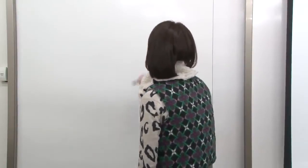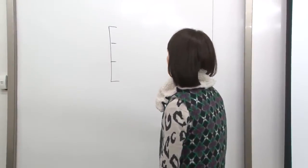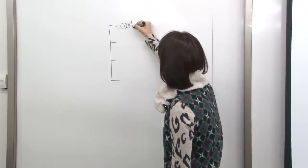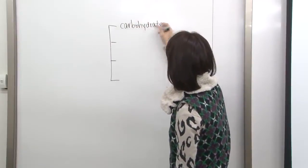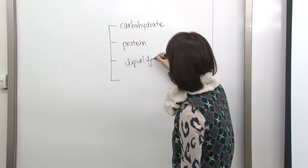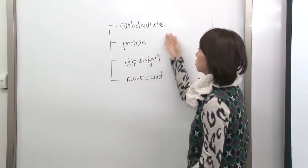Now that we've covered some terms, let's go to the organic compounds. Our body is made up of four different types of organic molecules, classified into four groups: carbohydrates, proteins, lipids or fats, and nucleic acids. The functions of these are all different.